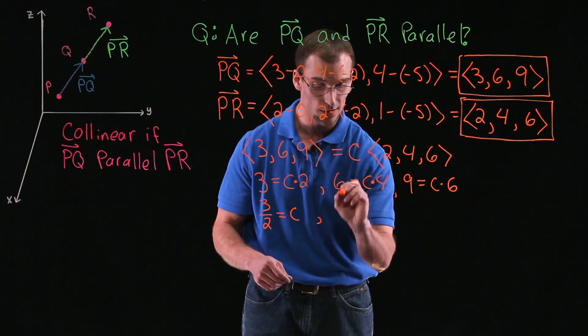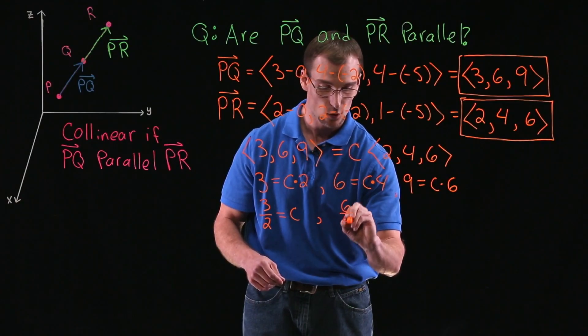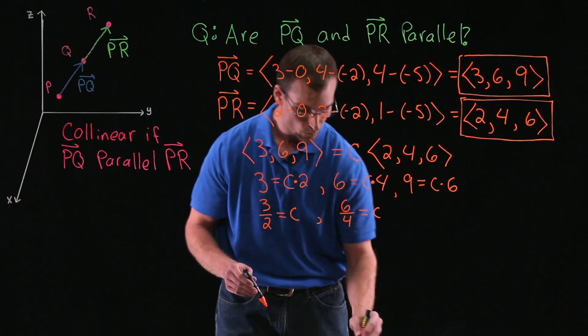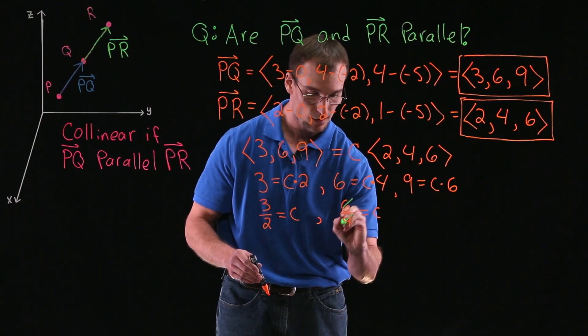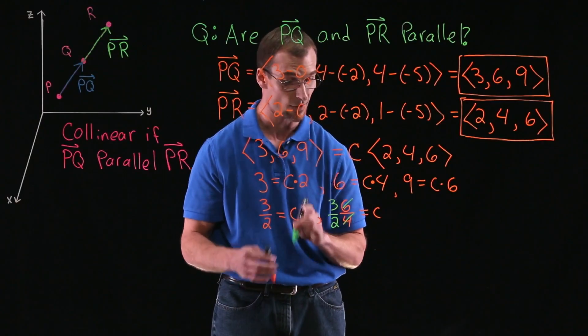Well, if we divide through both sides by 4 in the second part, we get 6 over 4, which equals C, which, of course, canceling, we indeed get 3 over 2, or 3 halves.